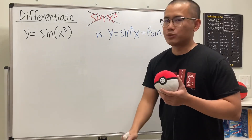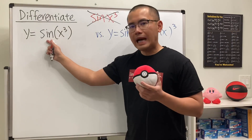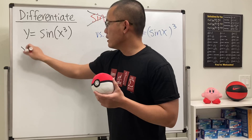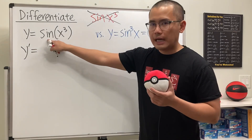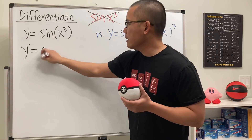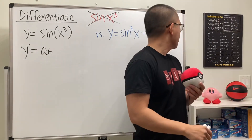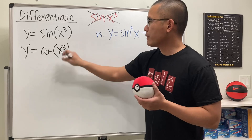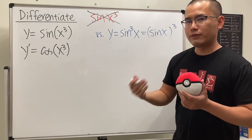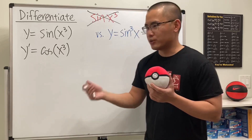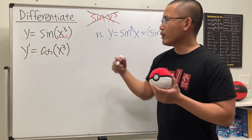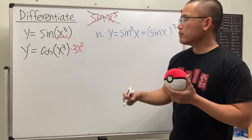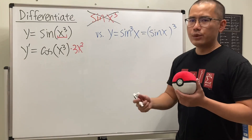For sine of x to the third power, the outer function is sine and the inner function is x to the third power. We differentiate the outside first: the derivative of sine is cosine, and the input stays the same, so we have cosine of x to the third power. But we're not done — we use the chain rule and multiply by the derivative of x to the third power, which gives us 3x squared.